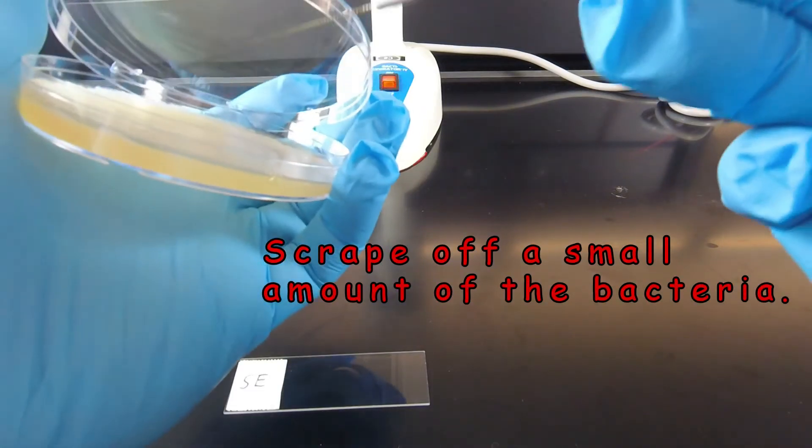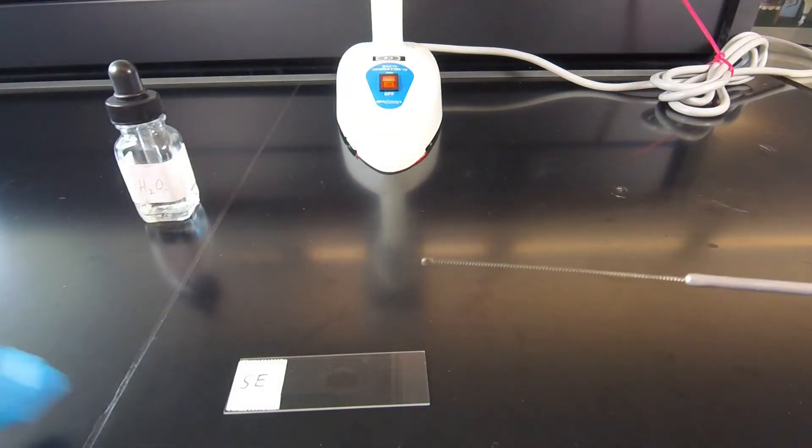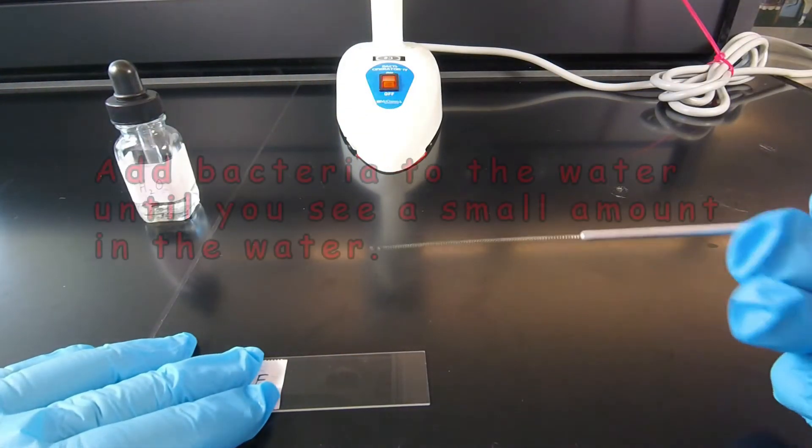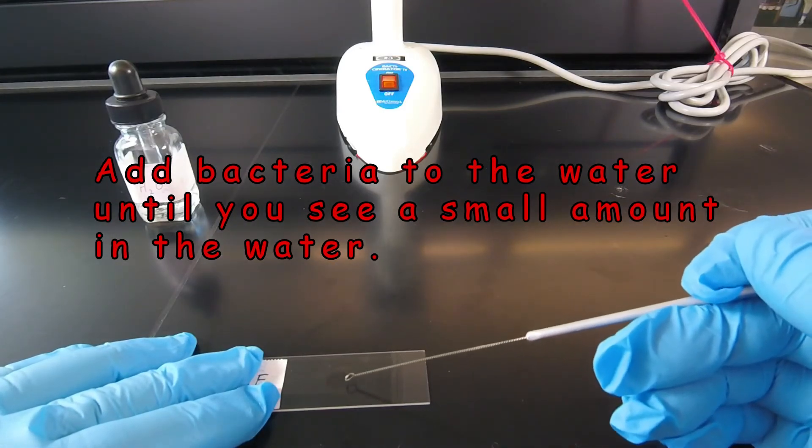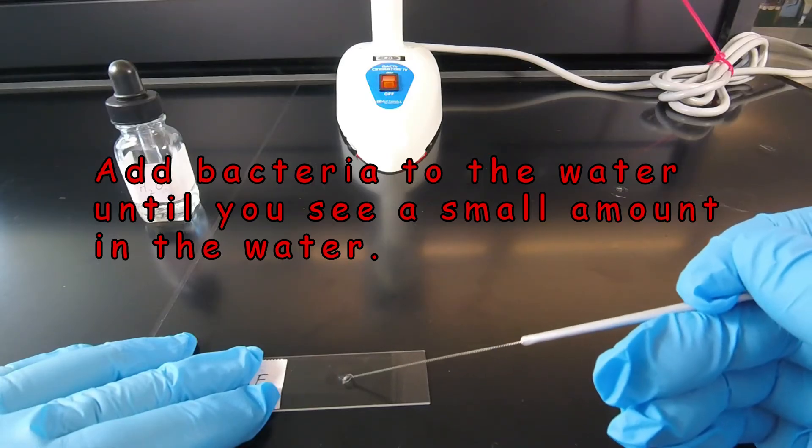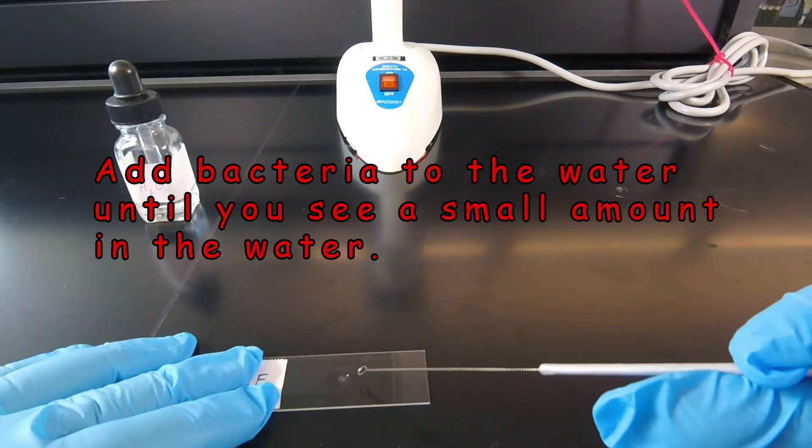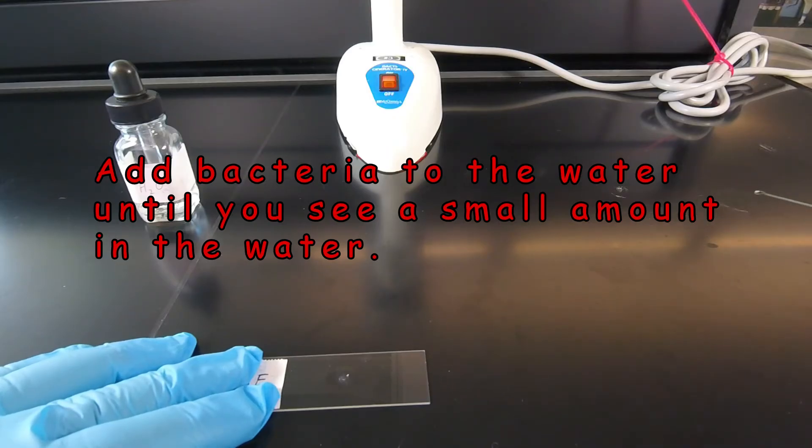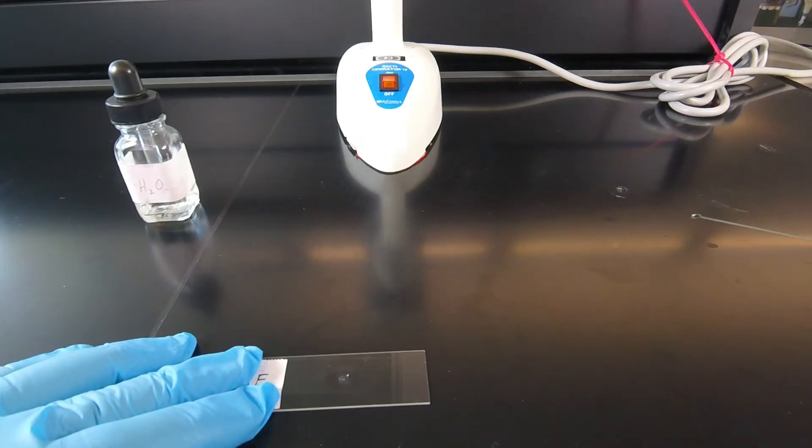We're going to scrape off a small amount of the bacteria. And what we do then is we just kind of slide the bacteria into the water, kind of touch it to the slide several times. There's no set number. We want to slide it in until we can see that there's definitely some bacteria in there. Now if you look closely you can see that we can see there's bacteria in the water, and so that's plenty.